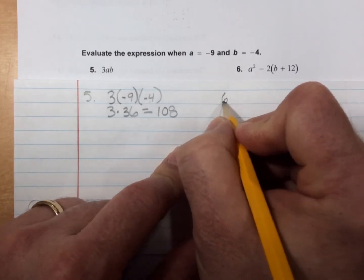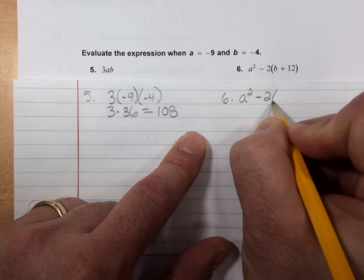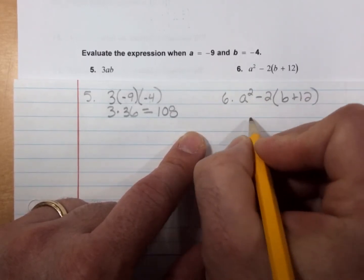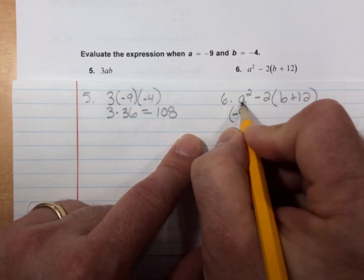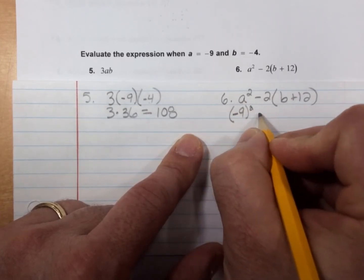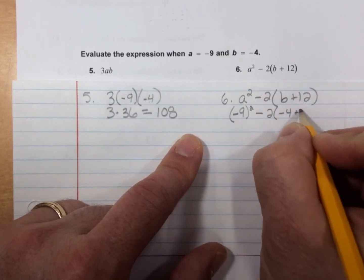Number 6. a² - 2(b + 12). a² will be -9 squared. -9. Put it in parentheses, because all of a is squared. And -9 is what a is. So -9 squared minus 2 times (-4 + 12).